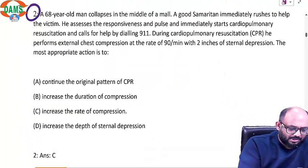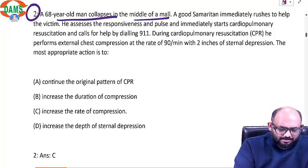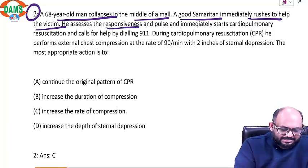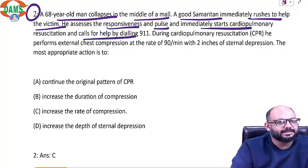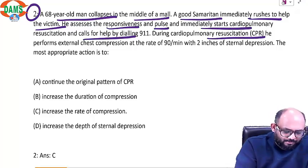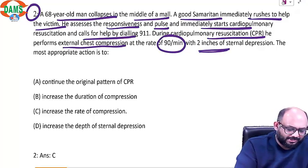Question number two: a 68-year-old man collapses in the middle of a mall. A good samaritan immediately rushes to help the victim. He assesses responsiveness and pulse, immediately starts CPR, and calls for help by dialing 911. During CPR he performs external compressions at the rate of 90 with two inches of sternal depression.